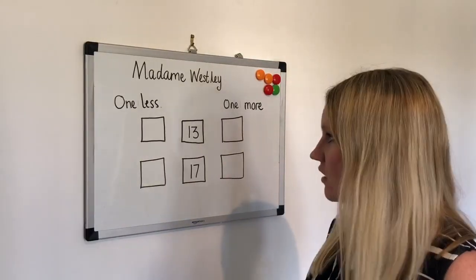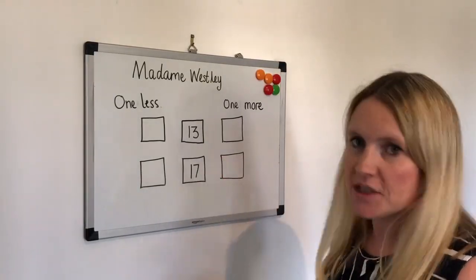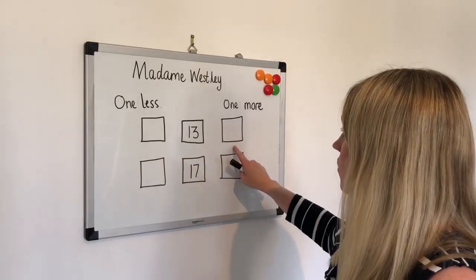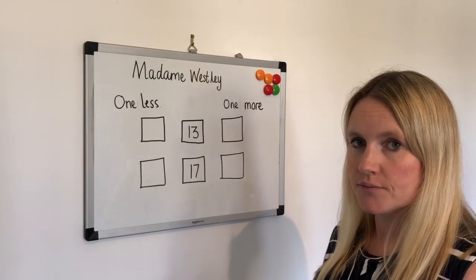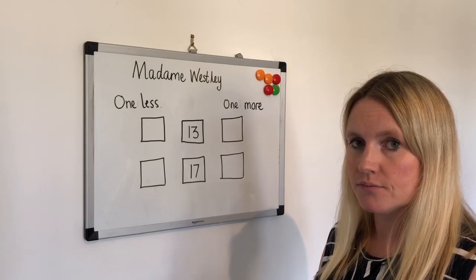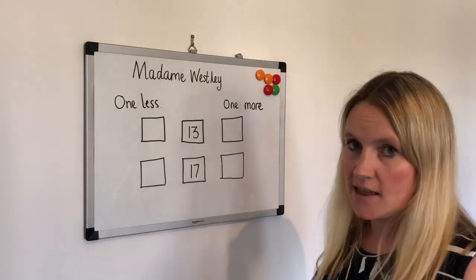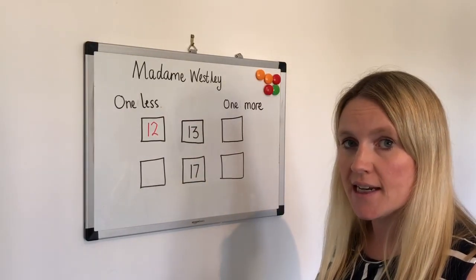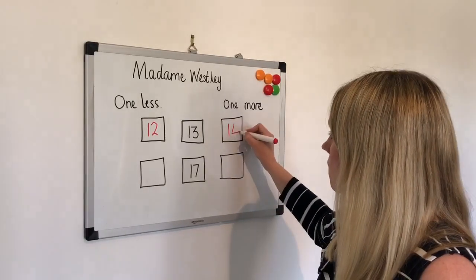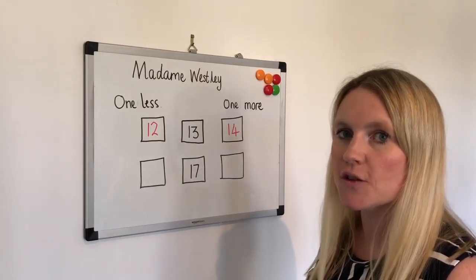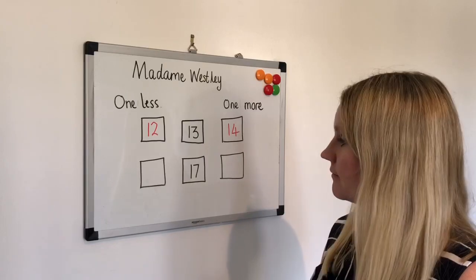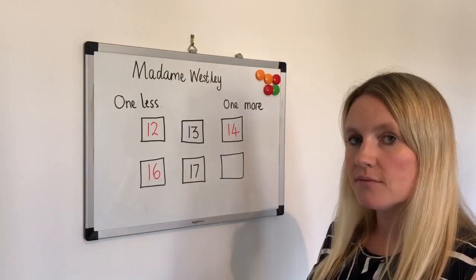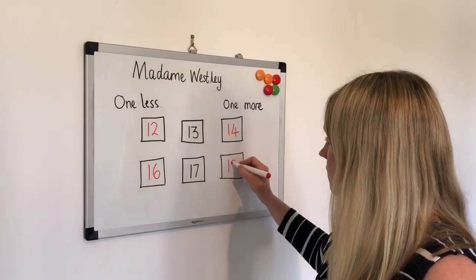Question five. This time we're looking at one less and one more than a number, and we've got two teen numbers: 13 and 17. On your whiteboard, write what is one less than 13 and one more than 13. One less than 13 is 12, and one more than 13 is 14. Have a look at number 17 and see if you can fill it in yourself. One less than 17 is 16, and one more than 17 is 18. Well done everybody.